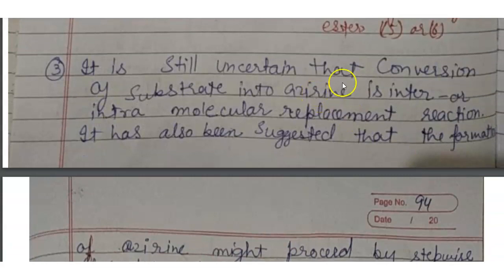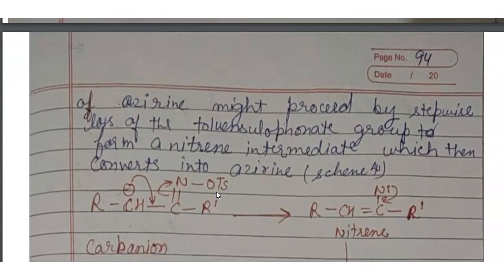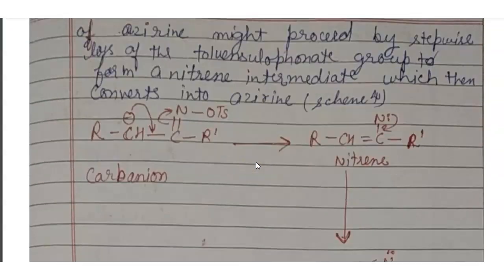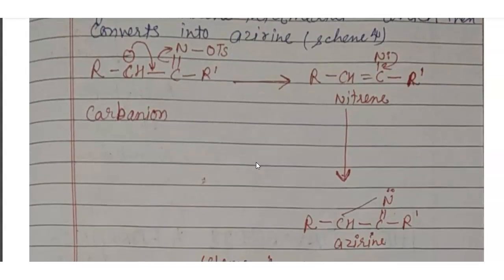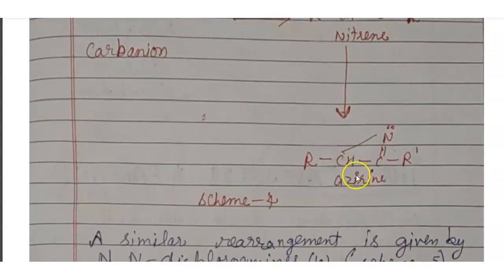Now, third evidence is, it is still uncertain that conversion of substrate into azirine is inter- or intramolecular replacement reaction. It has also been suggested that the formation of azirine might proceed by stepwise loss of the toluenesulfonate group to form a nitrene intermediate which can convert into azirine. Now, showing this formation of azirine in this reaction. Here is a carbene and this negative ion is attacked on single bond and this bond is shifted to this. Then, we will get nitrene and next further rearrangement we will get azirine.